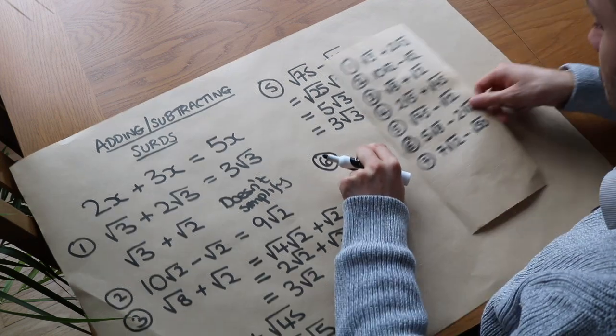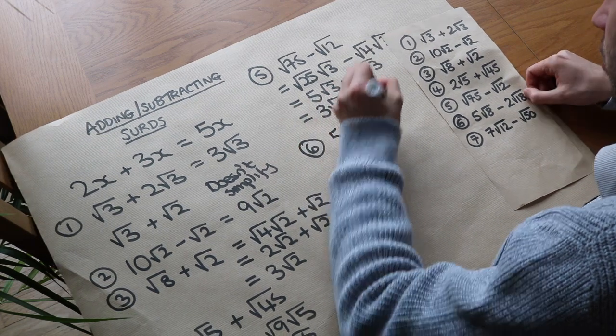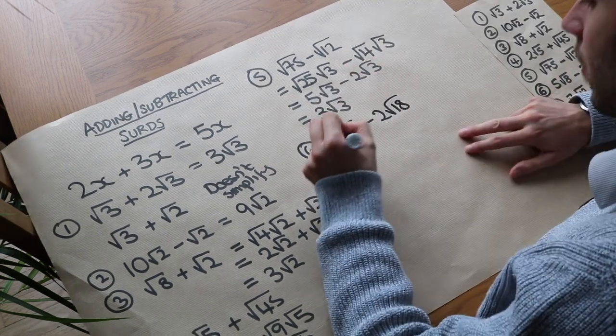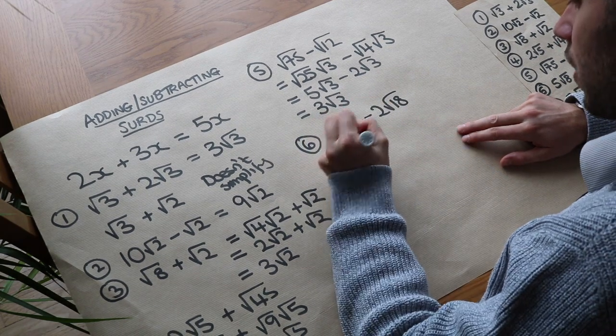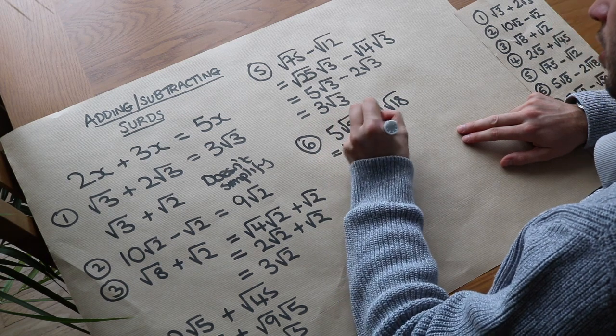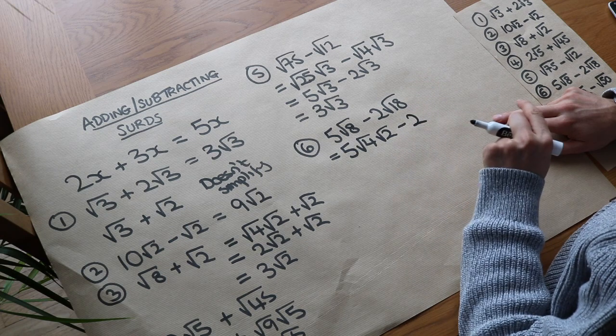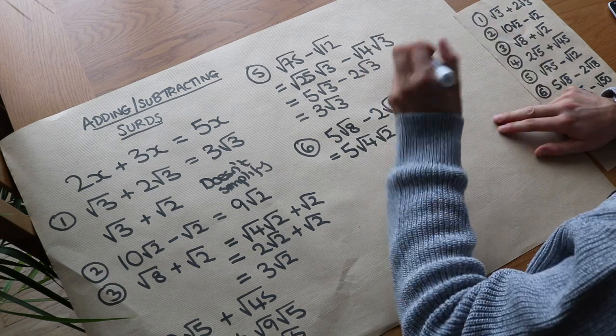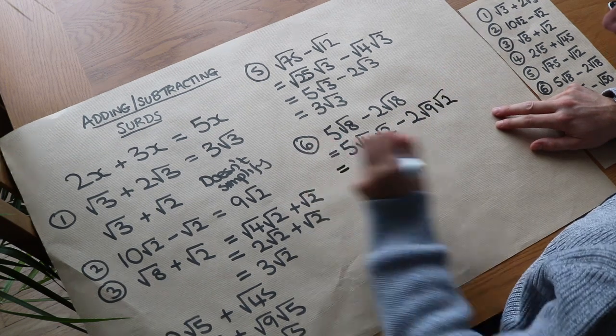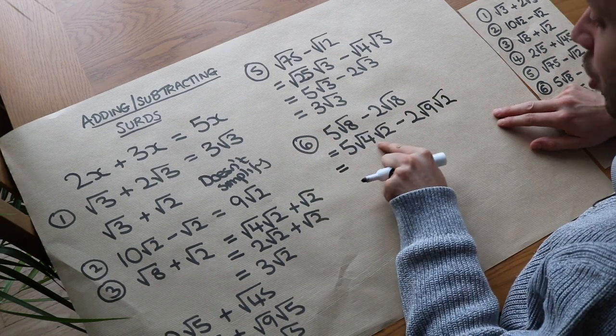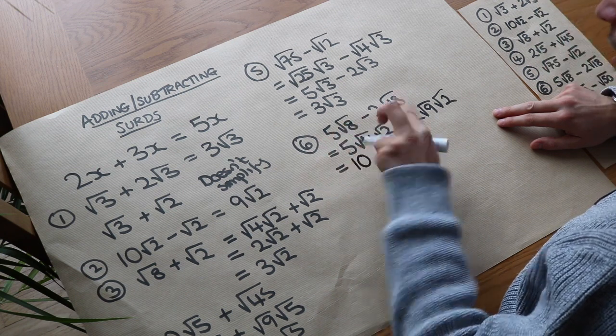What about the next one? We've got 5 root 8 minus 2 root 18. Well, the biggest square number that goes into 8 is 4, so it's 5 root 4 root 2. Subtract 2, and then root 18, what's the biggest square number? It's 9, so it's root 9 root 2. And then let's just simplify this. Well, the square root of 4 is 2, and we can times that 2 by the 5, so it's 10 root 2.